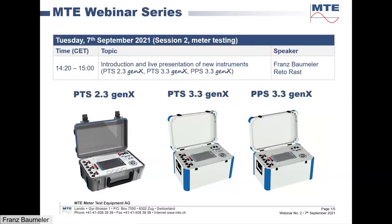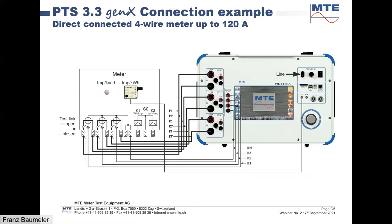You can see here three instruments which we will present today for the live presentation. We have the PTS 3.3 and PTS 2.3 Genetics. The PPS power source is not available, but it's almost the same as the PTS 3.3 Genetics power source. On the left side you see a three-phase four-wire direct connected meter — a so-called combinational meter for active and reactive energy — and we will test the active energy LED with one scanning head SH 2003 connected to impulse input one of our PTS 3.3 Genetics.